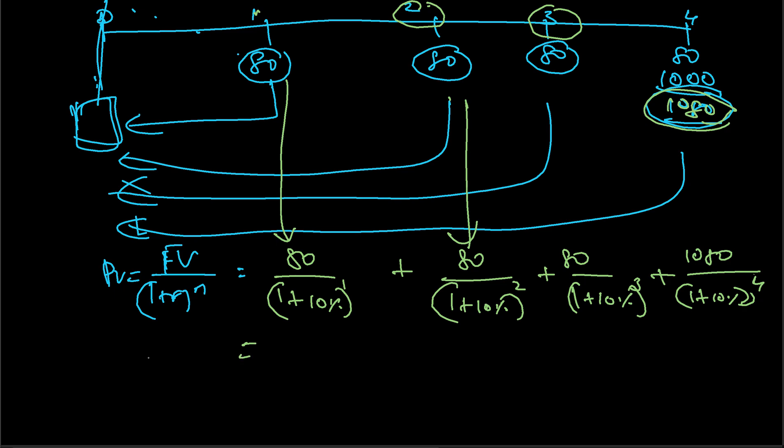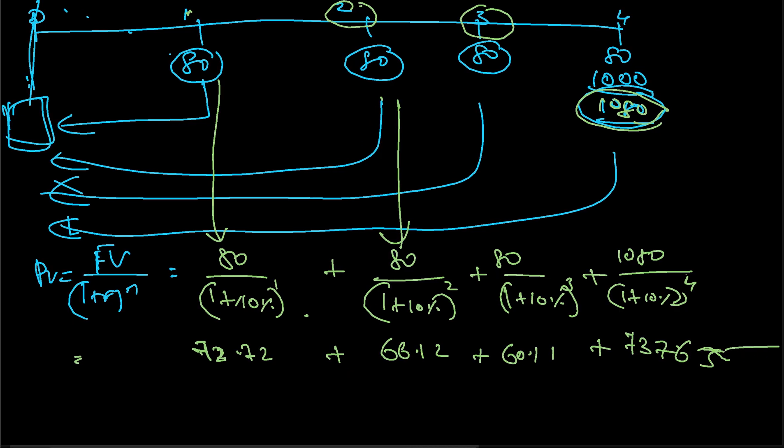Let me calculate all this. When we calculate: this comes to 72.72, this comes to 66.12, third one comes to 60.11, and the fourth one comes to 737.65. I will add up all this.